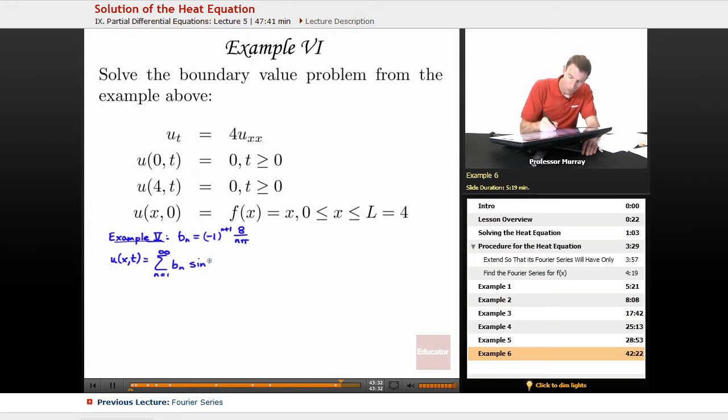It kind of looks like the Fourier series formula, sine of n pi x over l. But then there's also this t term, e to the negative n squared pi squared alpha squared t over l squared. Rather complicated.